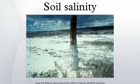Salinity due to irrigation: salinity from irrigation can occur over time wherever irrigation occurs, since almost all water contains some dissolved salts. When plants use the water, the salts are left behind in the soil and eventually begin to accumulate. Since soil salinity makes it more difficult for plants to absorb soil moisture, these salts must be leached out of the plant root zone by applying additional water. This water in excess of plant needs is called the leaching fraction. Salinization from irrigation water is also greatly increased by poor drainage and use of saline water for irrigating agricultural crops.